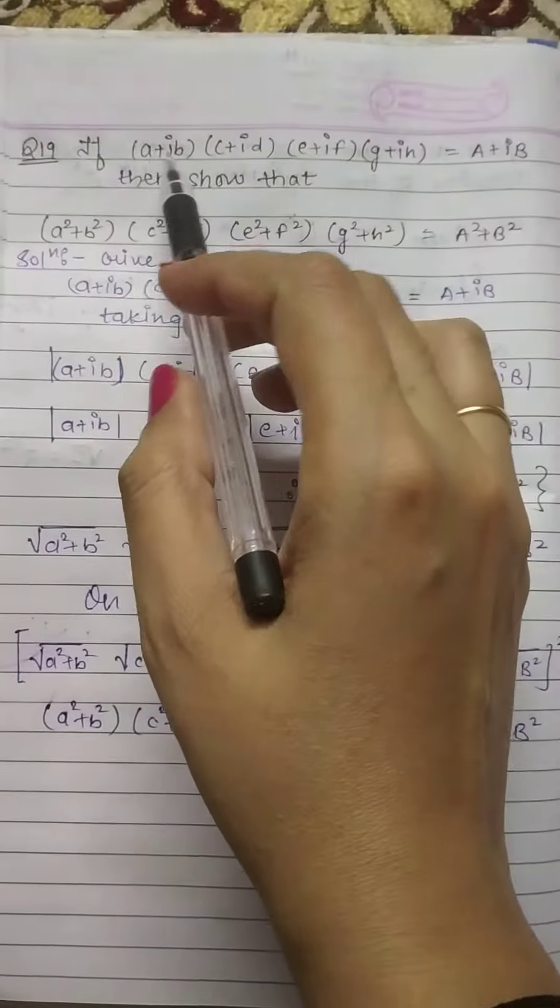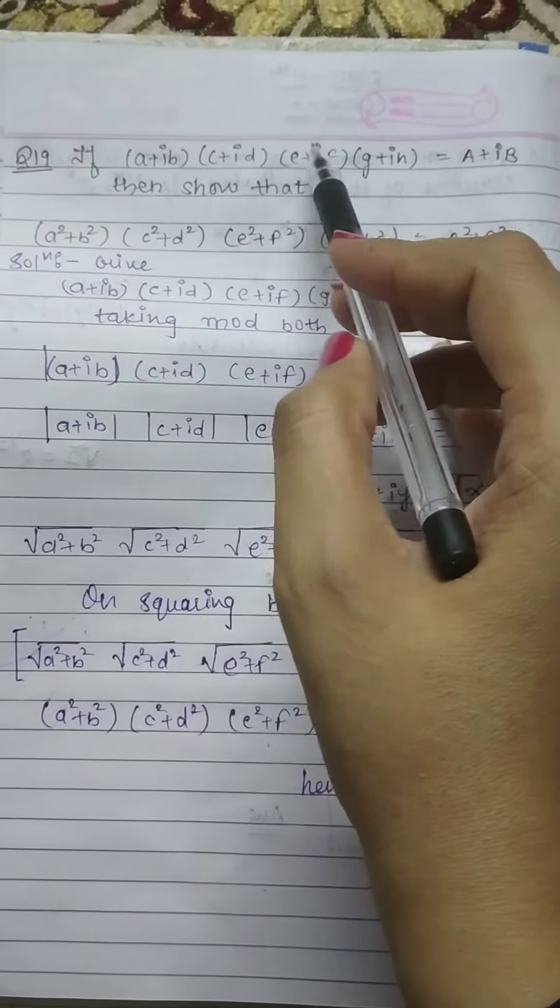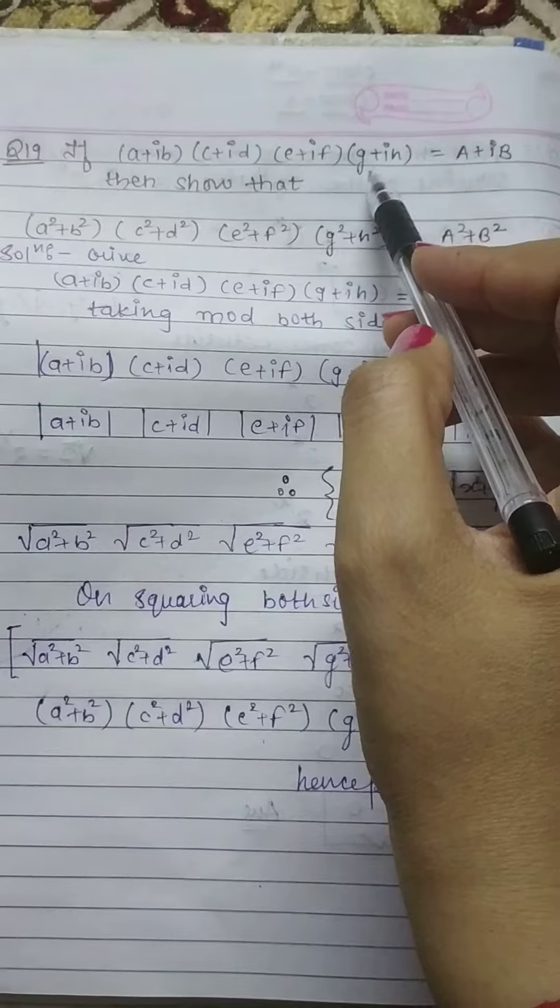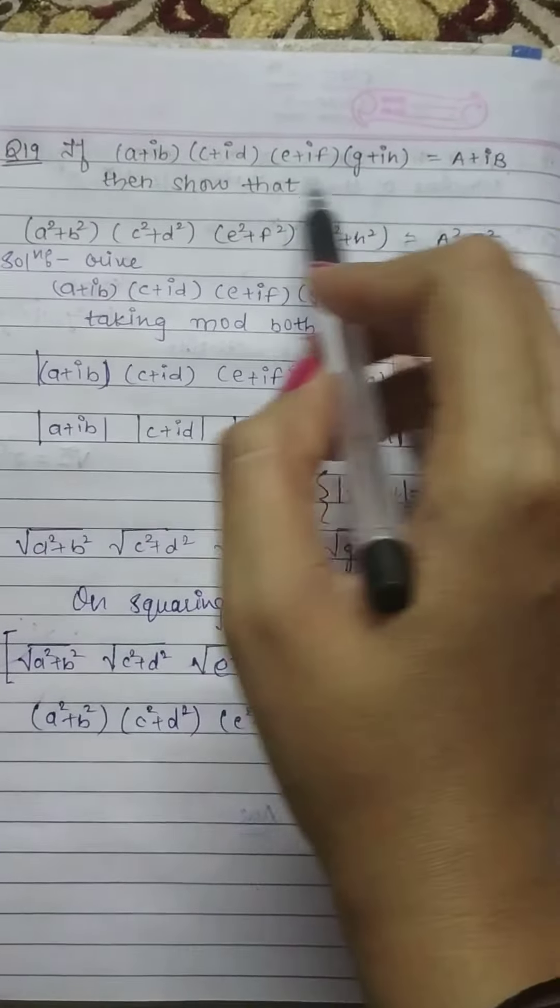If (A+iB)(C+iD)(E+iF)(G+iH) equals A+iB, then show that...